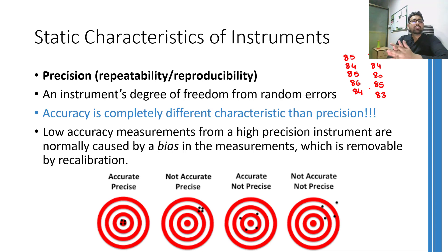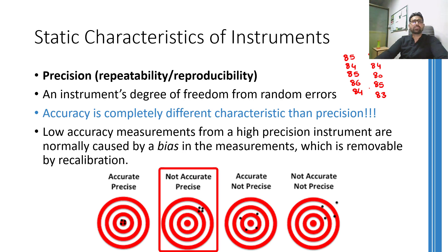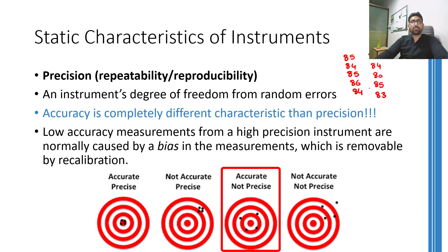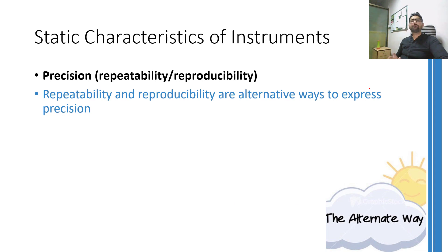Lower accuracy is normally attributed to some constant error in the measurement process, whereas lower precision is a much more dangerous thing. These figures explain this concept through a bullseye example. Accurate and precise hitting would cluster at the bullseye, while precise but not accurate throwing is clustered away from the center — this kind of problem can be solved relatively easily by adjusting the bias present in the system. Another image shows accurate yet imprecise hitting, and the last shows inaccurate and imprecise hitting.